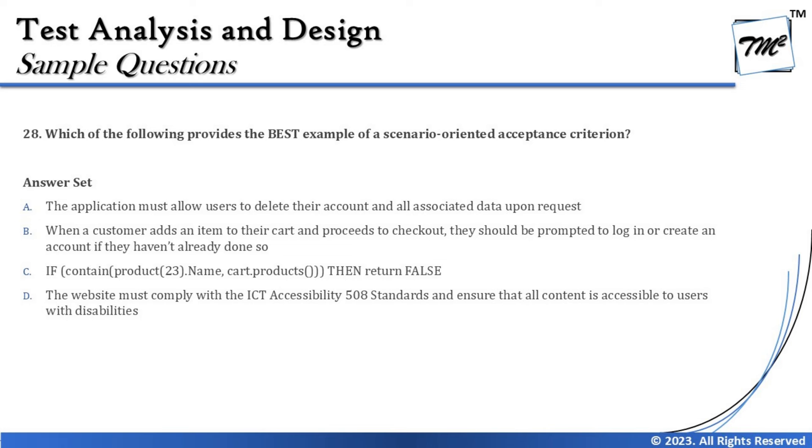The next question is number 27, which asks: which of the following provides the best example of a scenario-oriented acceptance criterion? If you remember, acceptance criteria can be written in two ways — one is scenario-oriented (given, when, then) and second is rule-oriented, which uses bullet form, numbered list, or input-output format. Knowing this context makes answering much simpler, but you must be able to recall it during the exam.